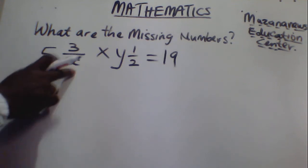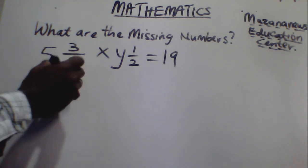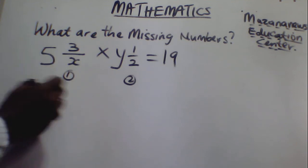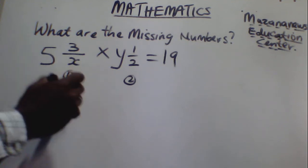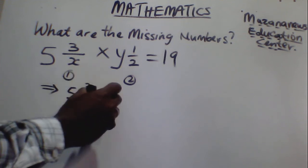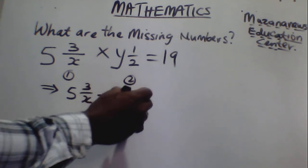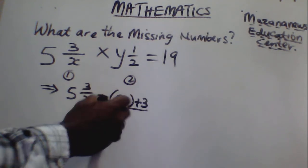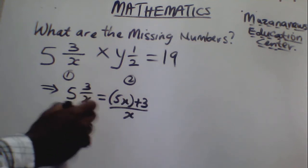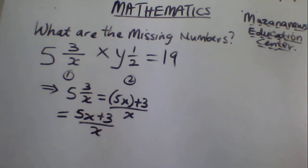The first thing is to convert this one — I call this one 1 and this one 2. From here, this implies 5 and 3 over x. You know how to do that: it gives us 5x plus 3 divided by x. So this gives us 5x plus 3 over x. This is the first one.